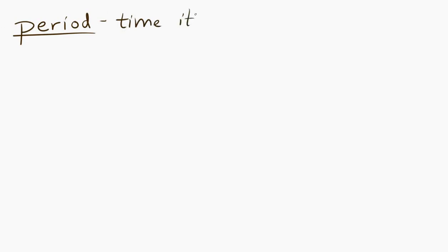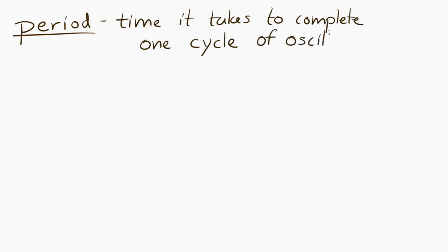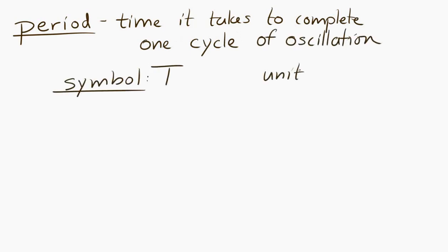In order to talk about oscillations — and in particular isochronous oscillations — we need a couple of terms. One is period. The period is defined as the time it takes for one entire cycle of an oscillation to occur. The standard symbol for period is capital T, and the unit is the second.